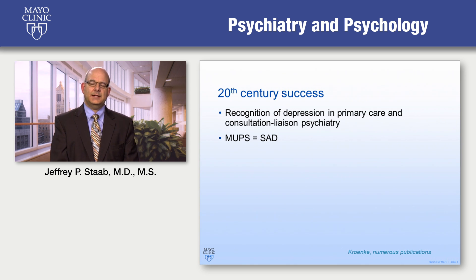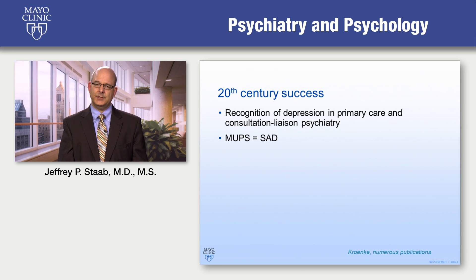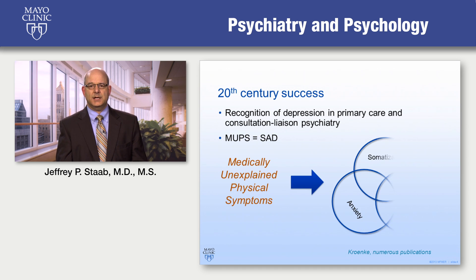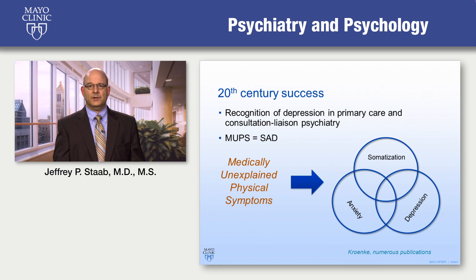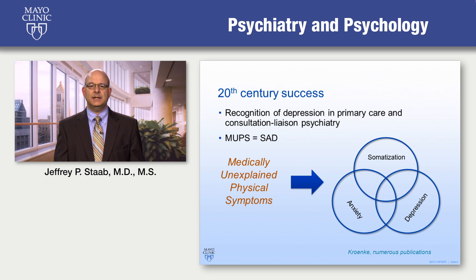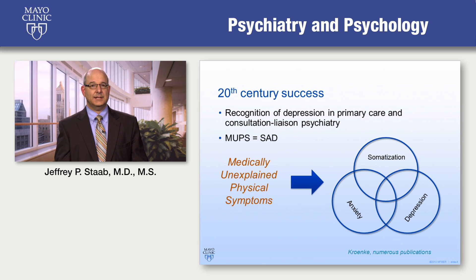I want to start with the 20th century. There was an important concept that developed in the latter half of the 20th century that really did move us forward. One of the core concepts was this idea of MUPS equals SAD — medically unexplained physical symptoms are caused by somatization, anxiety, and depression. This was work of Kurt Kronke and others who really showed that this overlapping triad was responsible for a lot of presentations of patients whose symptoms didn't yield much to medical evaluations in primary care settings.